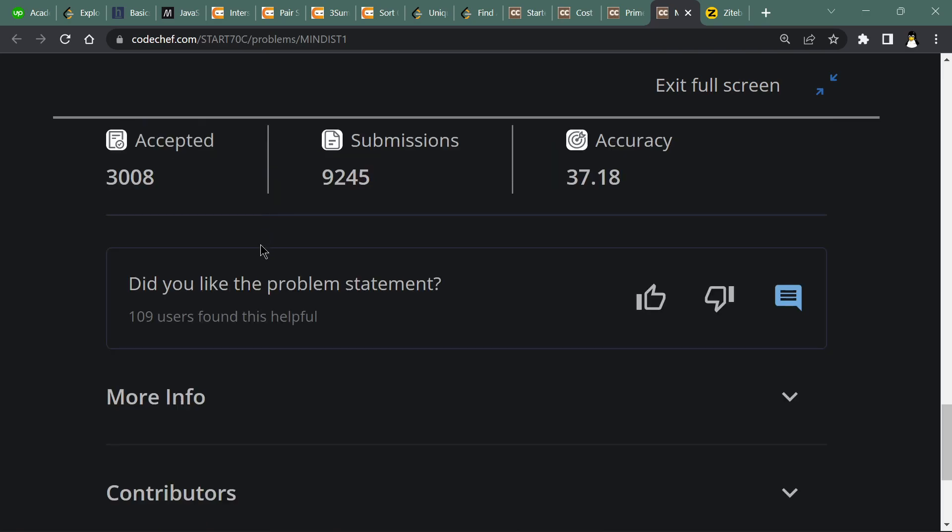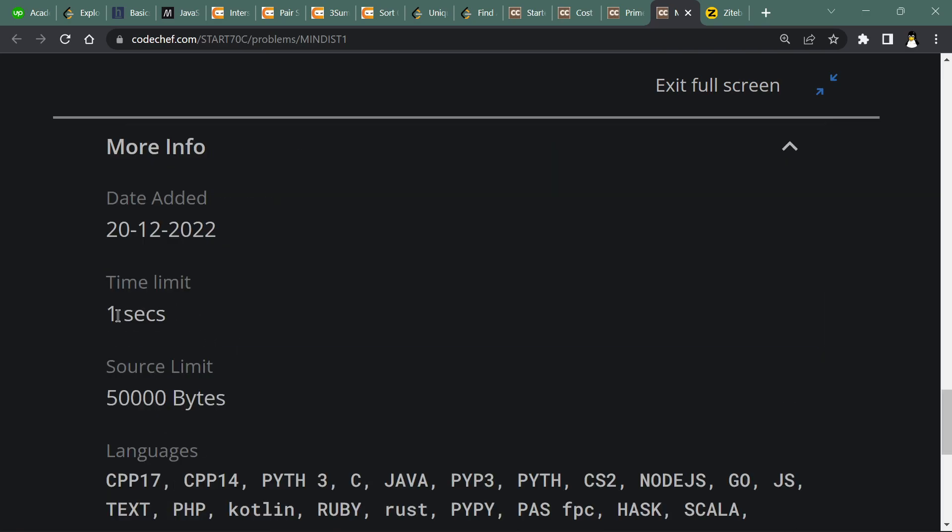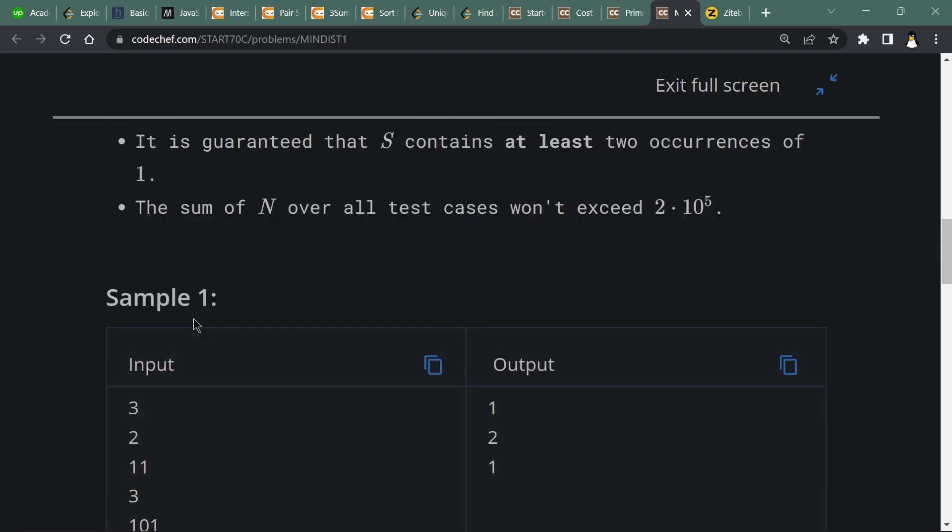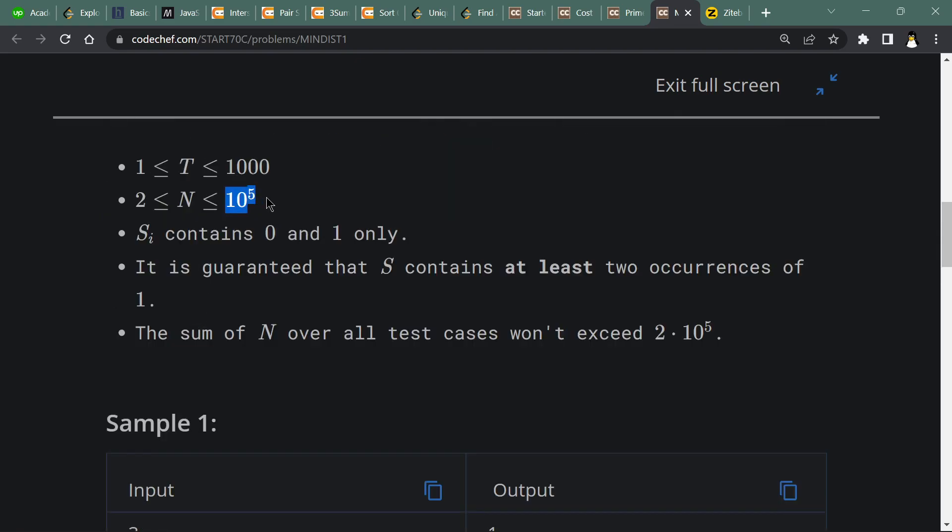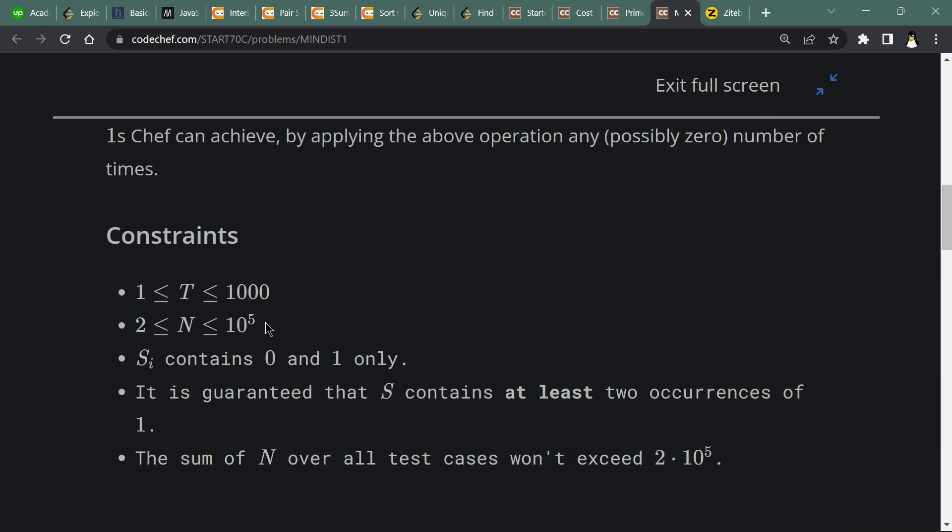The time limit is 1 second, so you should think of a big O of N solution so that 10^5 and 10^3 will result in 10^8 or less.